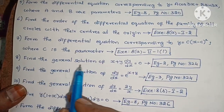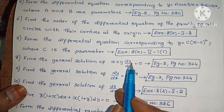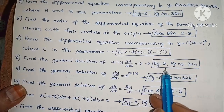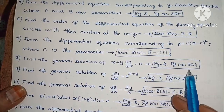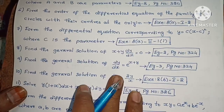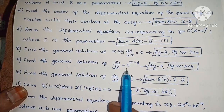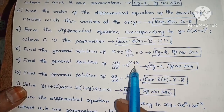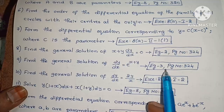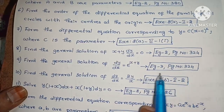Next, find the general solution of (x plus y)·(dy/dx) equals 0. Example 2, page number 324. Next, find the general solution of dy/dx equals e^(x+y). Example 3, page number 324.